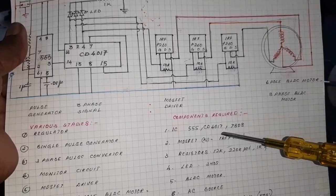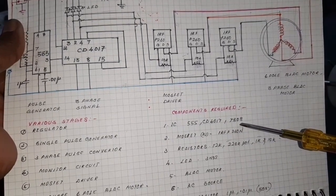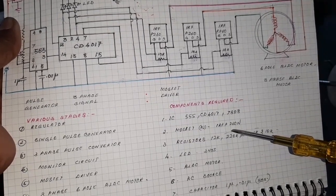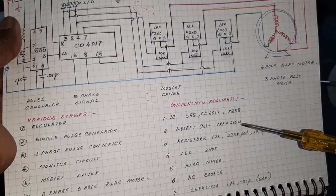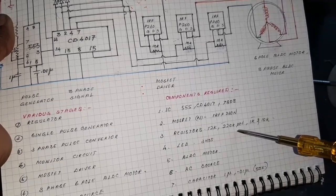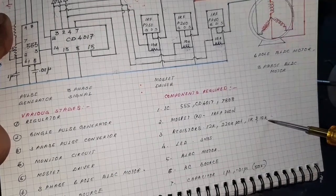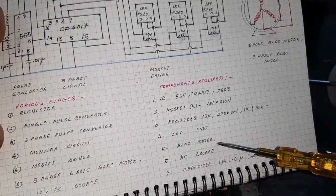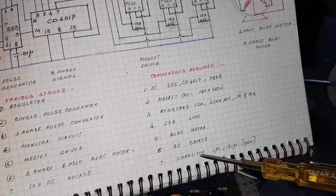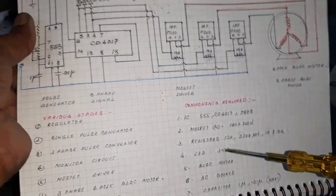Here the required components are: IC 555, CD4017, and 7808 regulator IC. Here the MOSFET IRF P260N. And resistors: 12K, 220K, 1K, and 10K resistor. LED three numbers, BLDC motor, AC source, regulator source, and the capacitors 1 microfarad and 104.